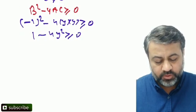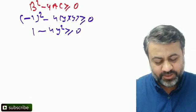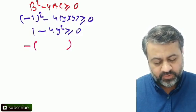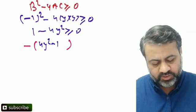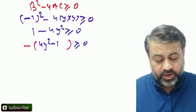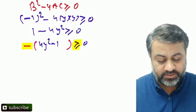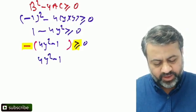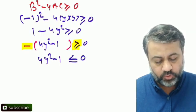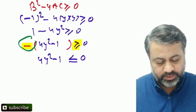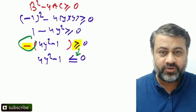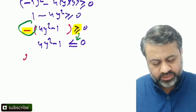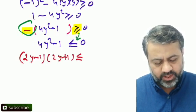Now we need to solve this inequality using the wavy curve method. Taking -1 common from 1 - 4y² ≥ 0 gives 4y² - 1 ≤ 0 — notice that removing the minus sign reverses the inequality sign, so greater than or equal to becomes less than or equal to. We can then write this as (2y - 1)(2y + 1) ≤ 0.